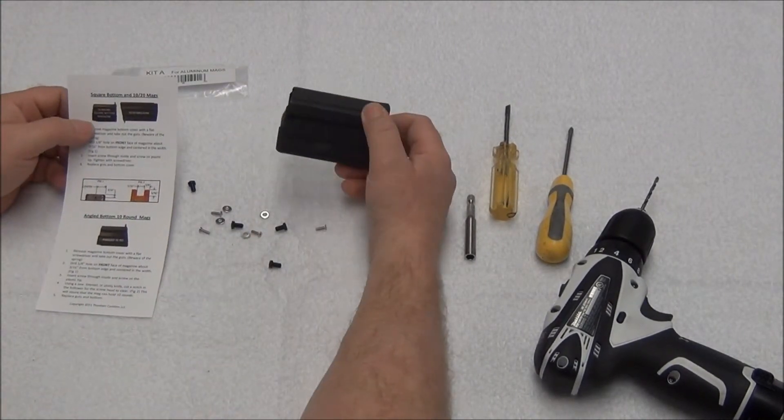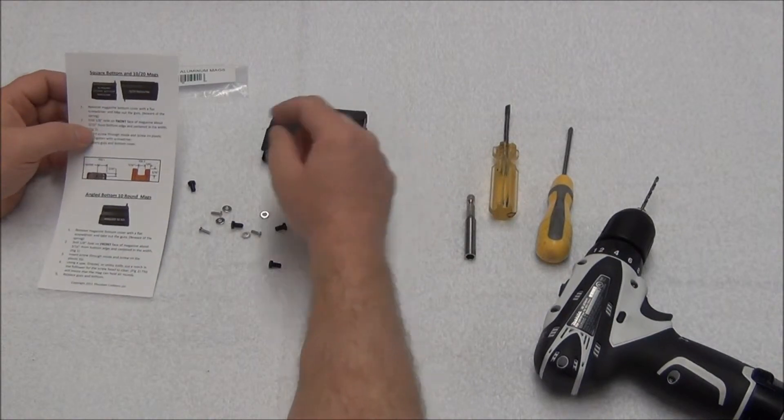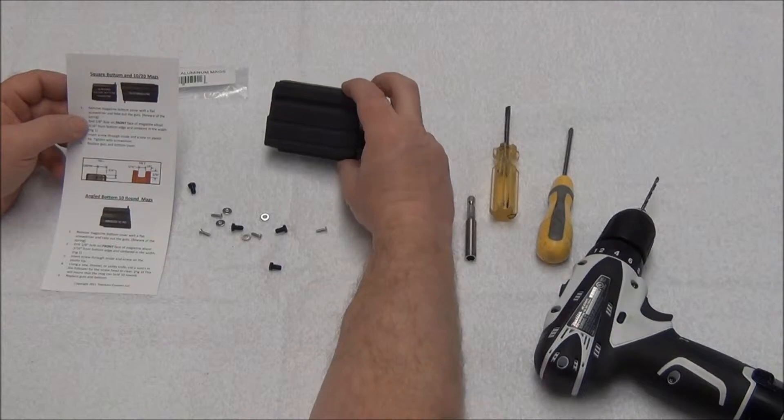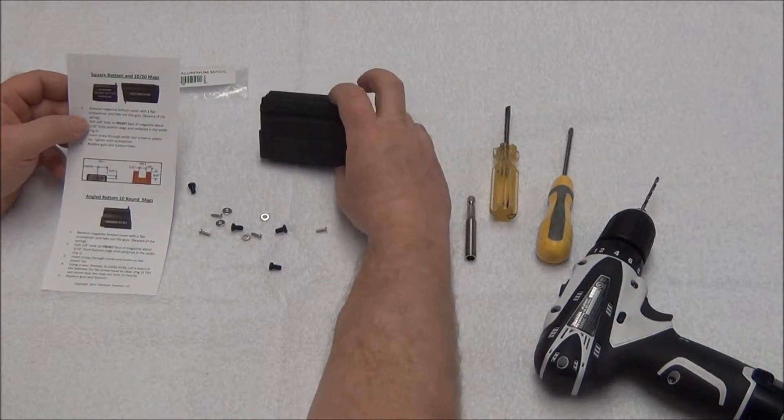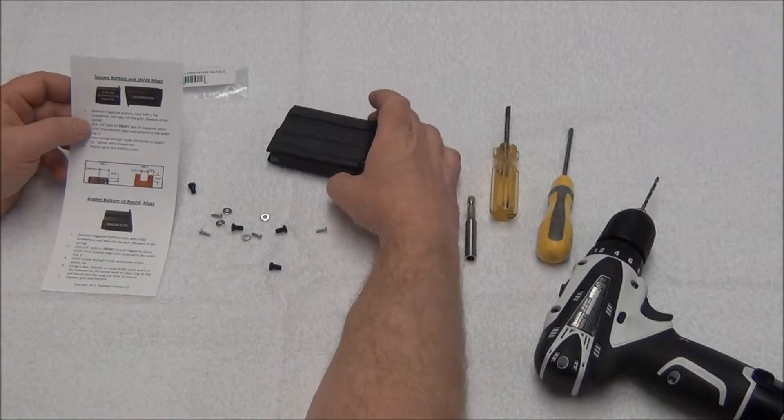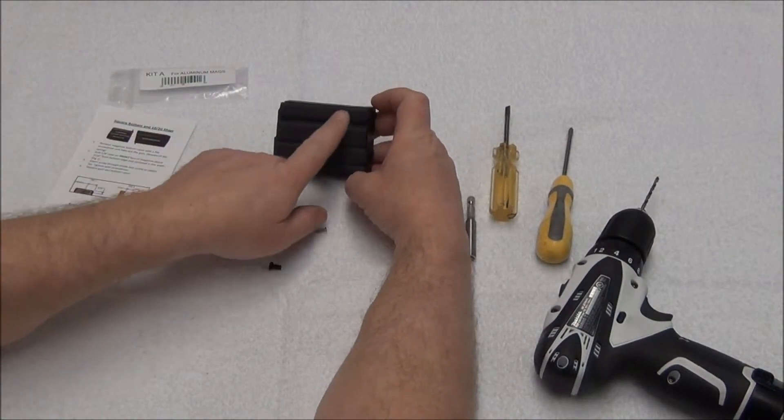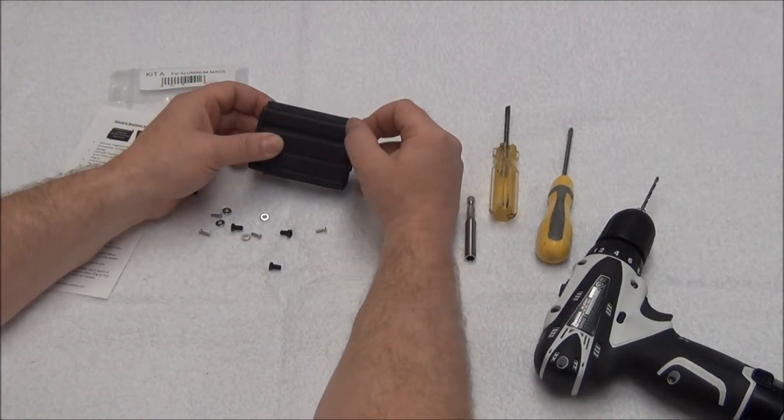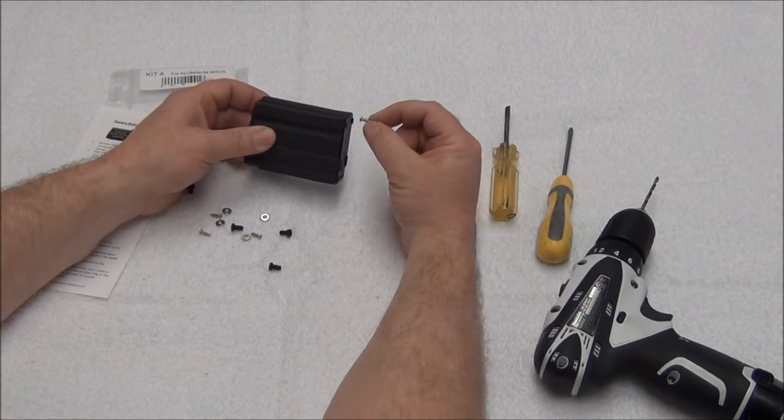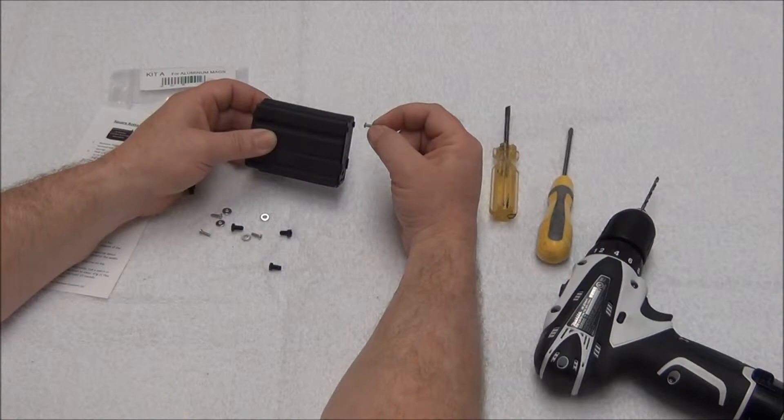This is a square bottom magazine. The square bottoms in anything bigger than a 10 rounder are the easiest to install. Because they're square bottom, the follower itself is not going to interfere with the head of the screw on the inside. These are the lowest profile screws we could find so that there is no interference with the follower.